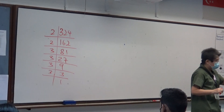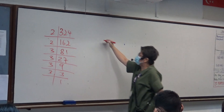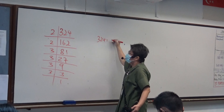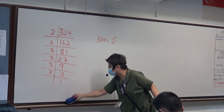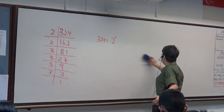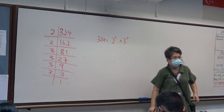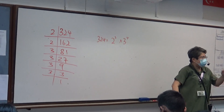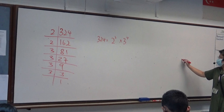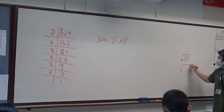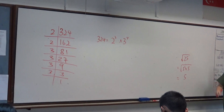Now I want to write the prime factorization first. So 324 is 2 to the power 2, times 3 to the power 4. Square root means there are two similar numbers — we pick up one. For example, square root of 25 is square root of 5 times 5. The answer is 5. Five — we pick up one.